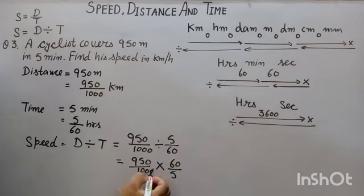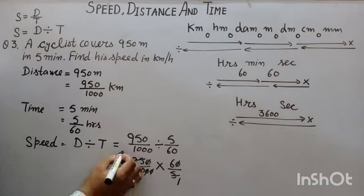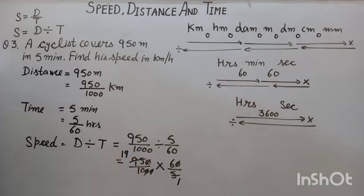Now cancel. 0 by 0, 0 by 0. With the help of 5 table: 5 ones are 5, 5 ones are 5, 4 remaining. 45. 5 nines are 45.